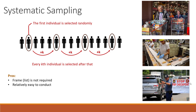The advantages of this sampling method are that it does not require a frame or list of the individuals in the population, and it's really easy to conduct. However, it also has some disadvantages. The population needs to exhibit a natural degree of randomness. If there is a certain pattern in a population, then systematic sampling can result in a sample that's not well representative of the population.